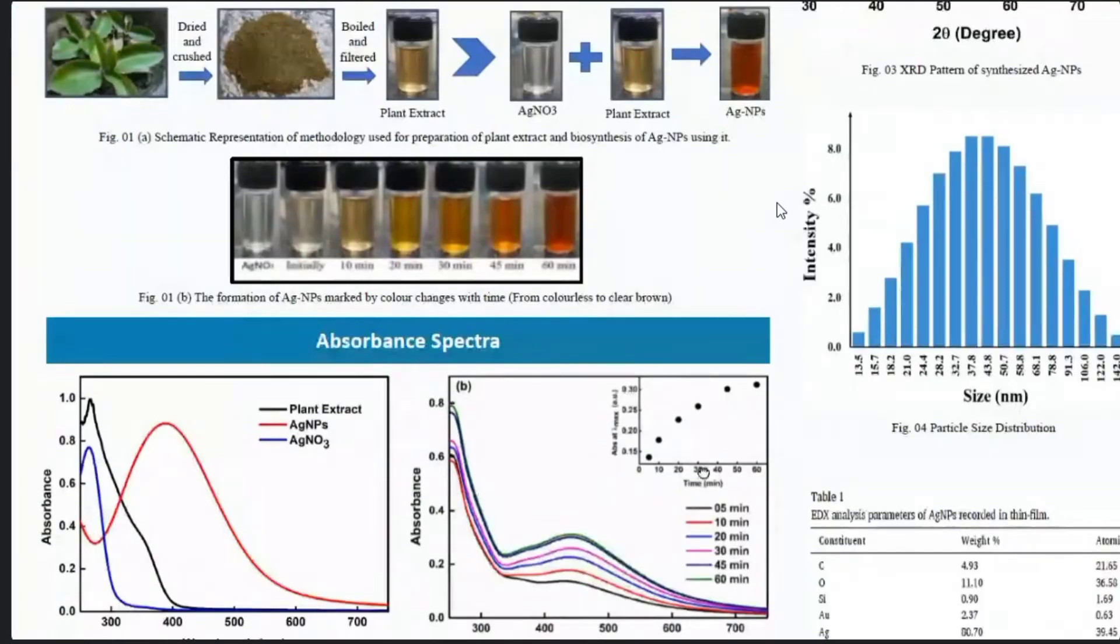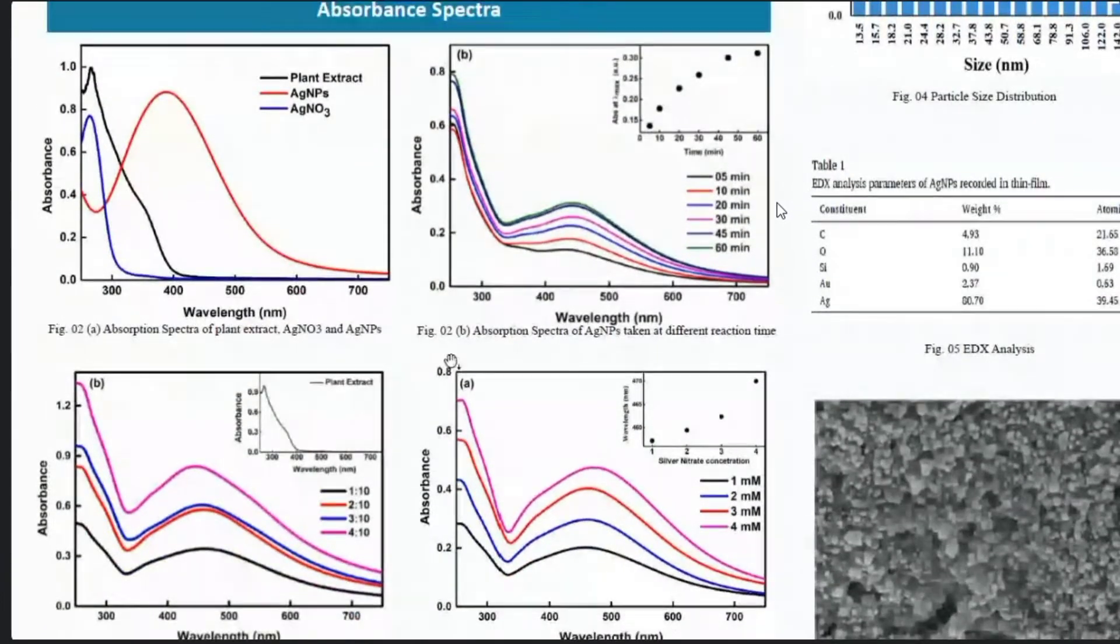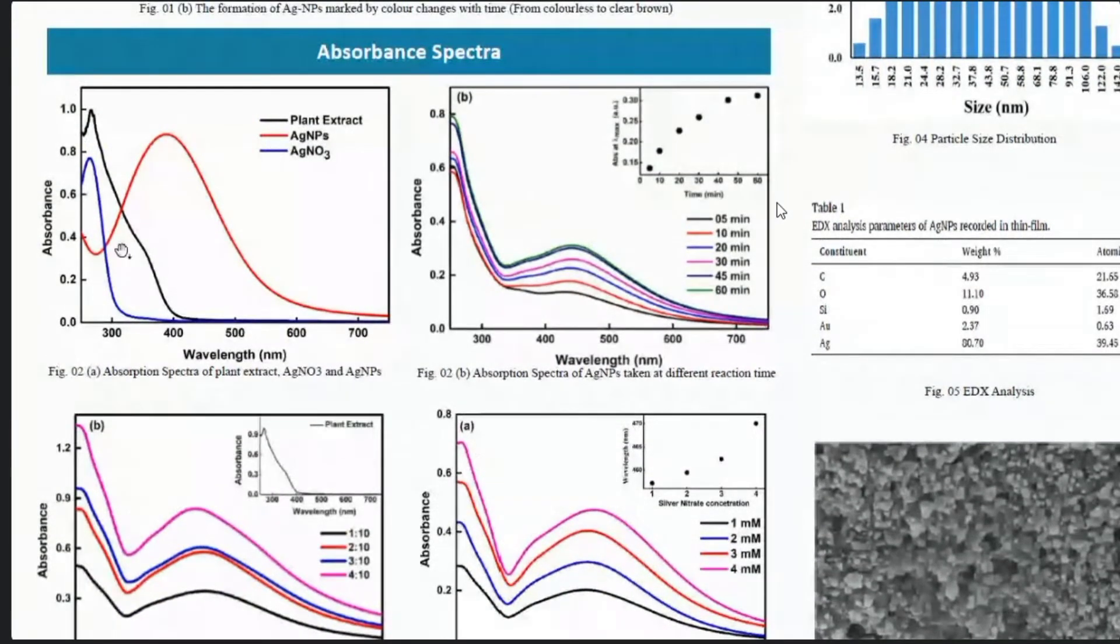We have the absorbent spectra of these biosynthesized nanoparticles. Figure 2a represents the UV spectrum for the plant extract, the silver nanoparticles and our precursor that is silver nitrate solution. This is the peak of the plant that is present due to various reducing and capping agents like flavonoids, terpenoids, phenolic acids.